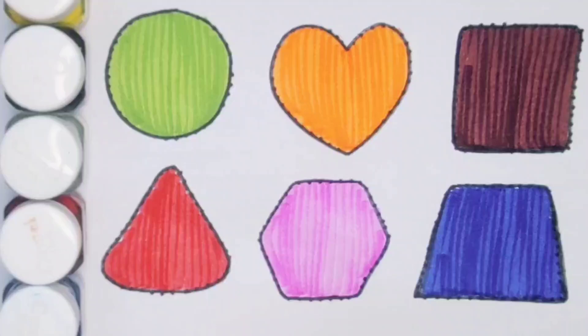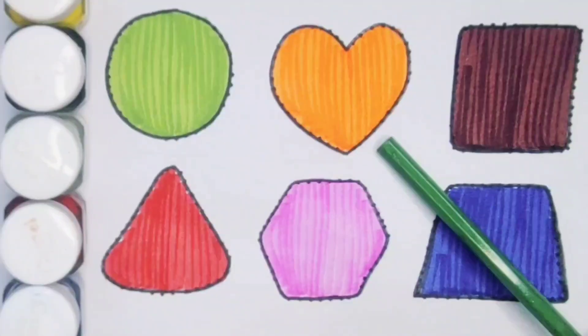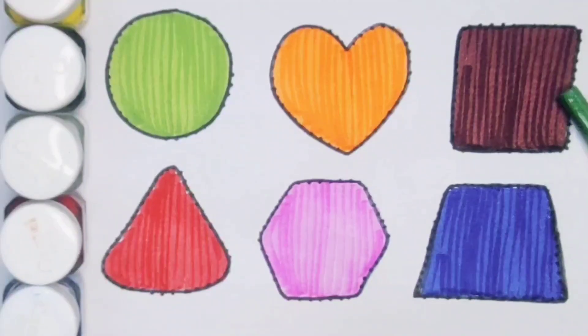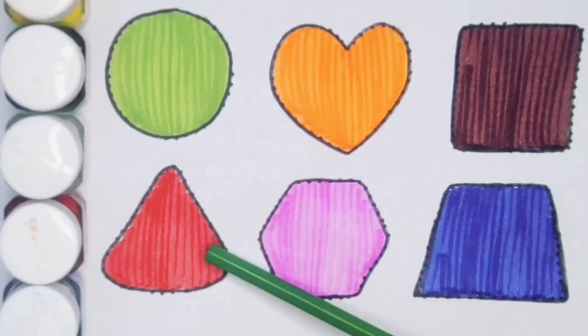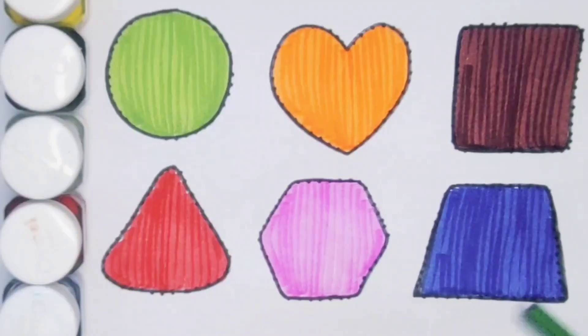What we learned? We learned green color circle, orange color heart, chocolate color square, red color triangle, pink color hexagon, blue color trapezoid.